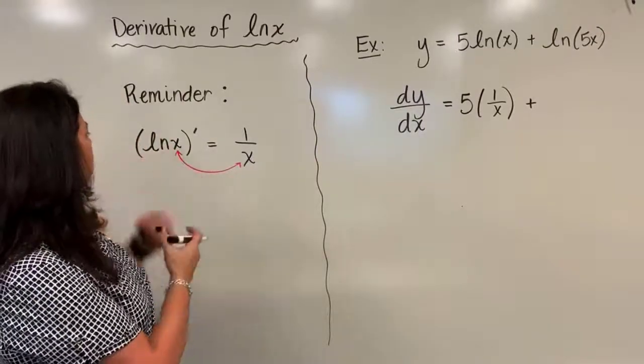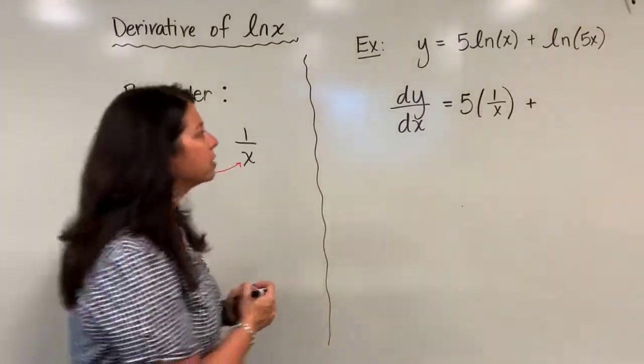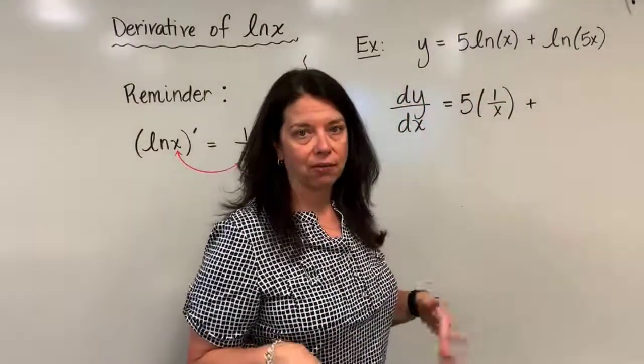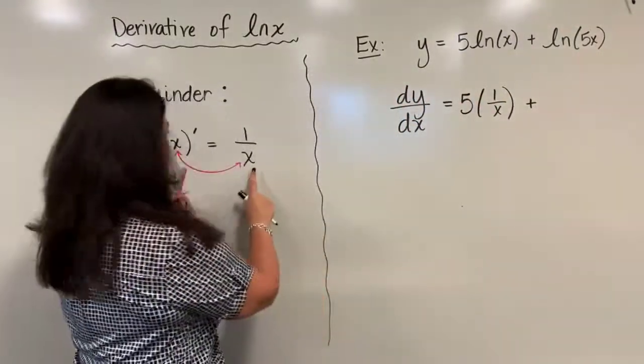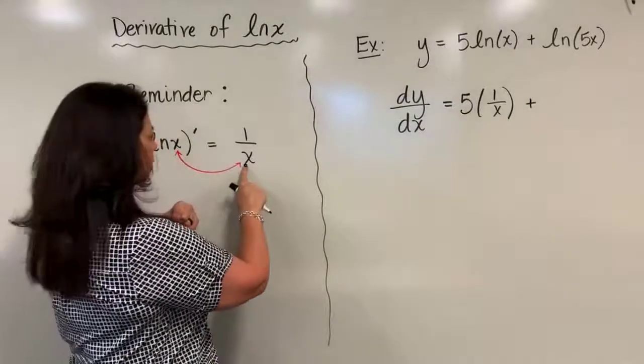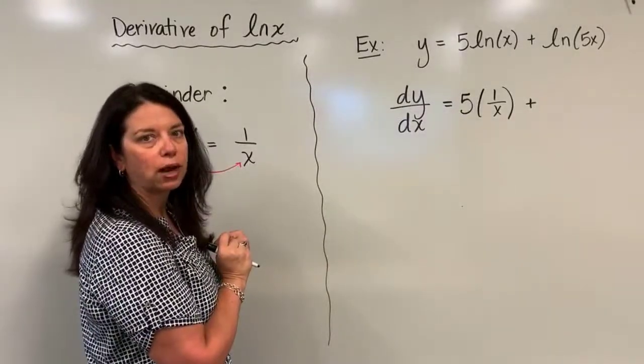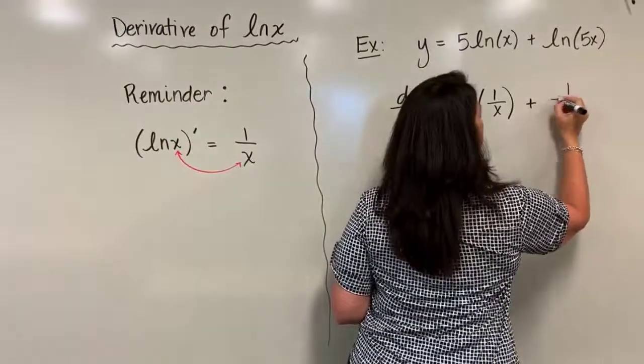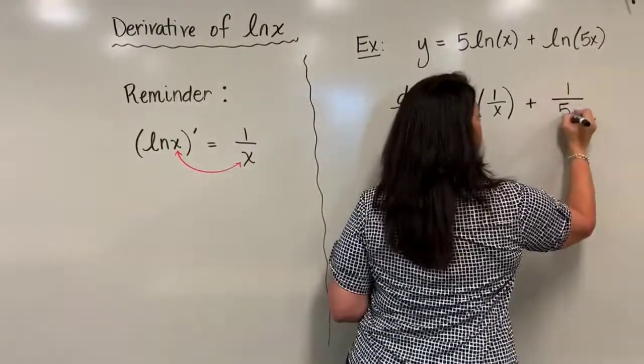So I return back over here as a reminder to my rule: derivative of natural log x is 1 over x. Here, however, I don't just have an x, I have a 5x. So those have to match. Whatever your argument is here needs to go in the denominator when you actually write your form 1 over x.